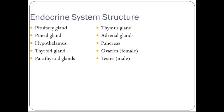The endocrine system structure, also called the ductless glands. Some of the glands within the endocrine system are pituitary, pineal, hypothalamus, thyroid, parathyroid, thymus, adrenal, pancreas, ovaries, and testes.